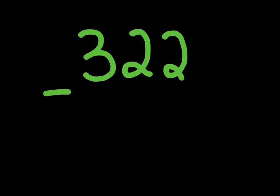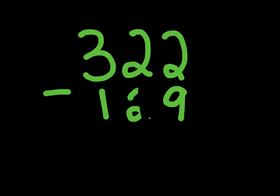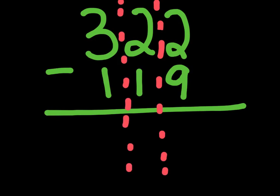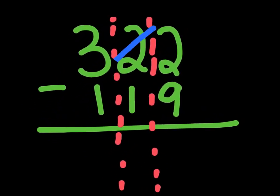This next problem is going to require carrying over, like we did last time. Let's take 322 minus 119. We break this up into three columns — left, middle, and right. Let's try the right hand subtraction first: two minus nine. We can't do two minus nine because two is less than nine, so we have to borrow from the middle column — making that digit a one and making this a 12.